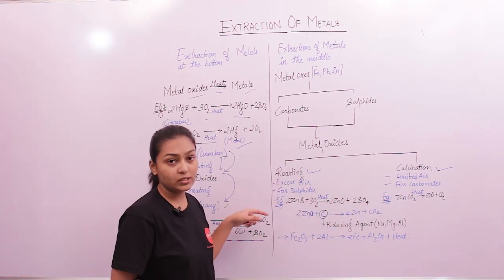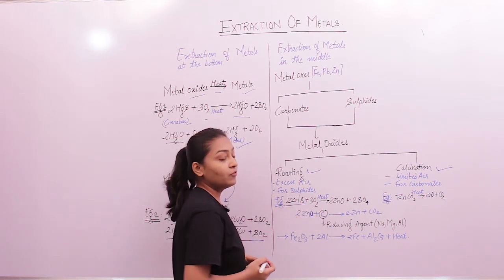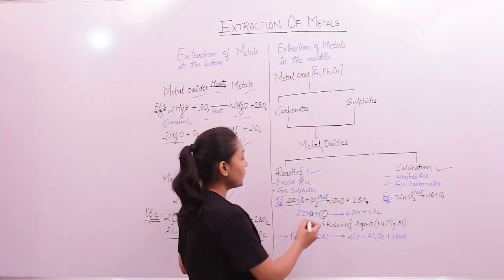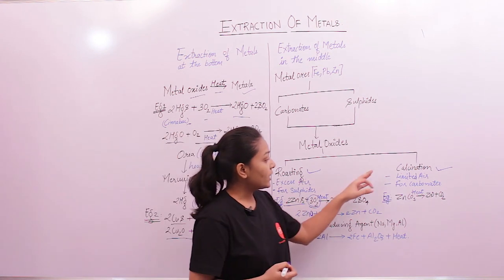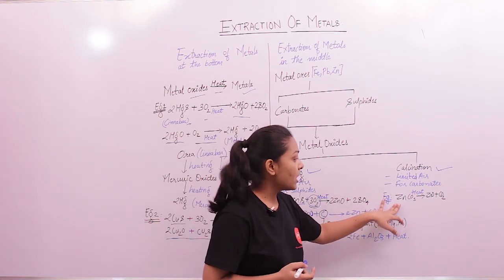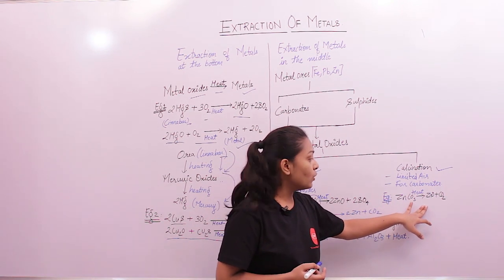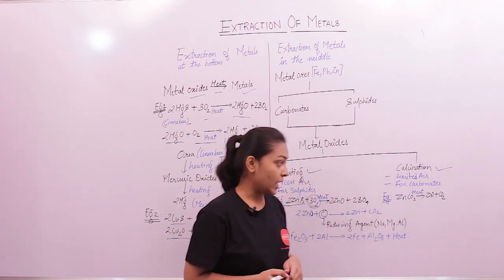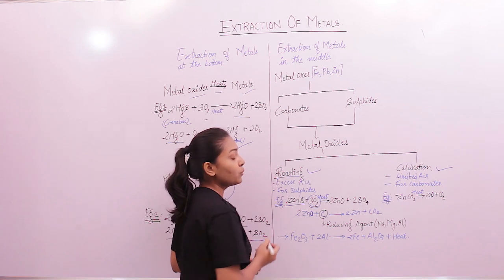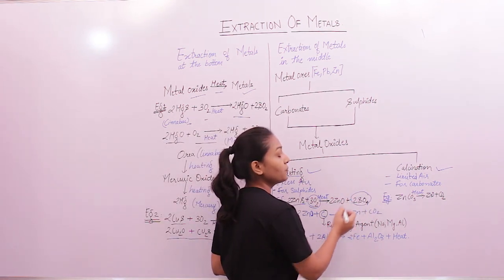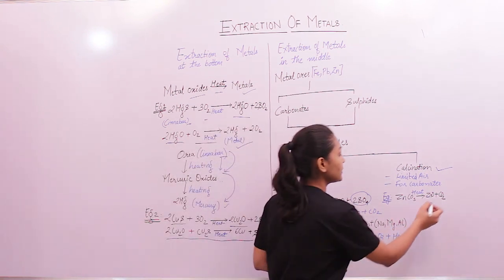For roasting, I have taken the example of zinc sulphide, which is heated in the presence of excess air to form zinc oxide. For calcination, zinc carbonate is heated in the presence of limited oxygen to form zinc oxide and carbon dioxide gas. Note that the by-product of roasting is sulphur dioxide gas, while the by-product of calcination is carbon dioxide gas.